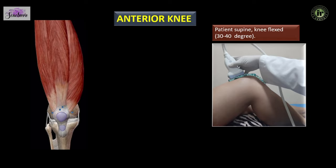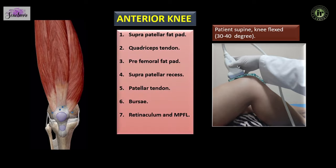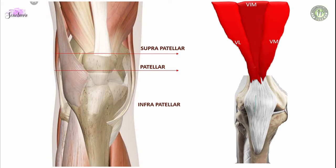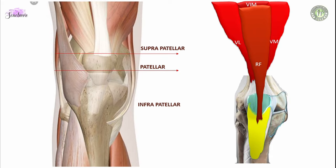Starting with the anterior knee, the patient is supine with the knee flexed at 30 to 40 degrees. Put a pillow below the knee joint to make the patient comfortable. We are going to see the following structures one by one: the quadriceps muscle forming the quadriceps tendon, the patella and prepatellar area, the patellar tendon, retinaculum, suprapatellar recess, and the prepatellar and infrapatellar bursae.